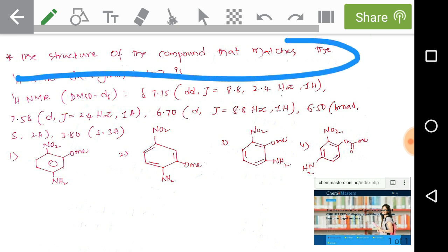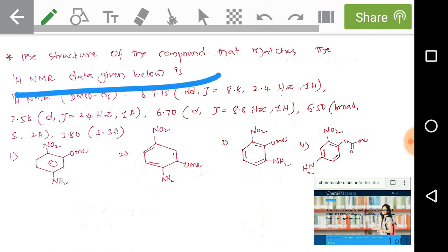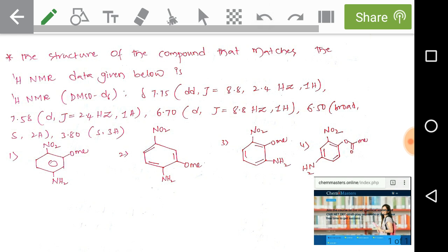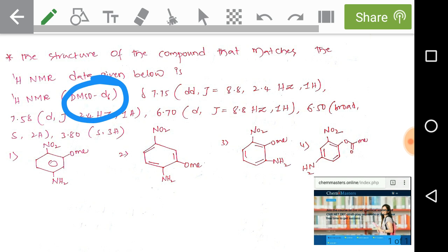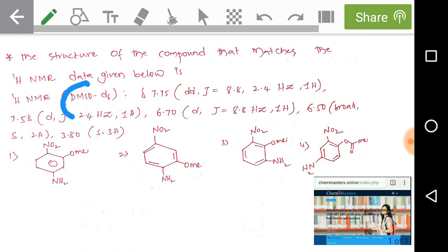The structure of the compound that matches the HNMR data given below is: we have been given HNMR data in the solvent dimethyl sulfoxide. D6 means 6 hydrogens of dimethyl sulfoxide are substituted with 6 deuterium.